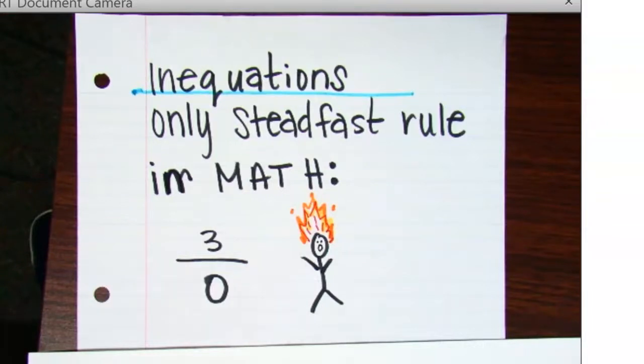Remember, if you divide by zero, an alternate universe is going to implode, and this little guy's head is going to go up in flames. Every time we commit that atrocity, it is bad. We have broken every law known to man about math. It is absolutely unacceptable.